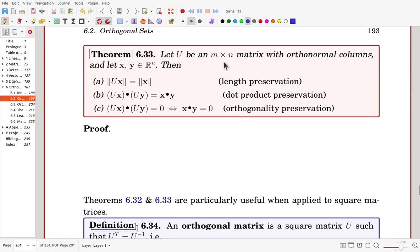U is an n by n matrix with orthonormal columns. Then, from earlier theorem, there is if and only if U transpose U is identity. Now if we choose x and y from Rn,